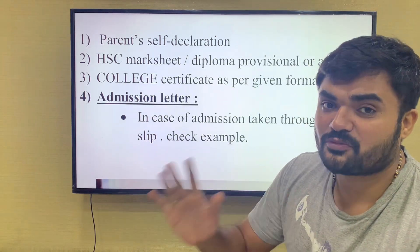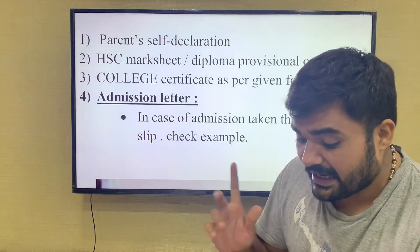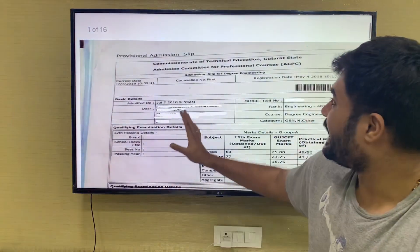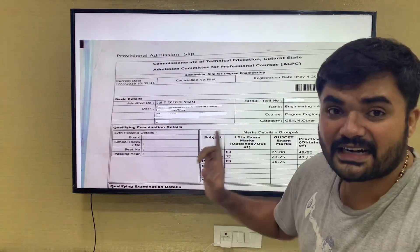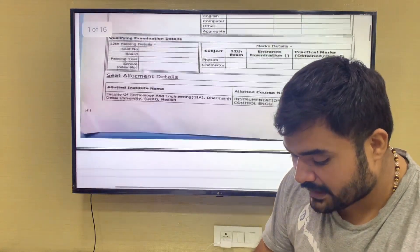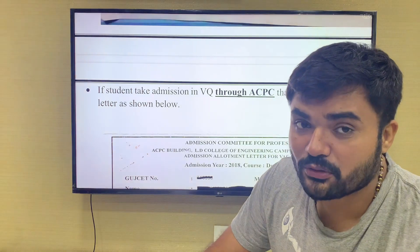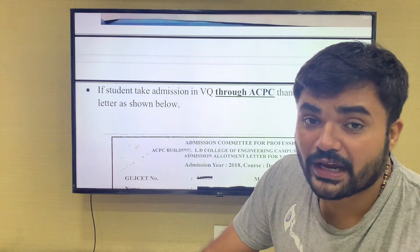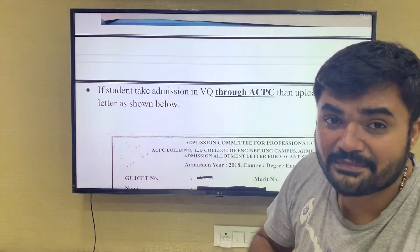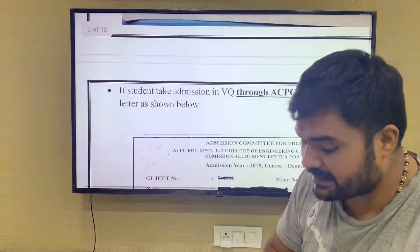You have a link below in the description box where you will find all the information to solve your doubts. The fourth document is your admission letter, which everyone has. The admission letter will be uploaded in the documents. If you have the admission letter, you have the ACPC through admission letter. Students who take admission in the WECN quota through ACPC will have the admission letter.